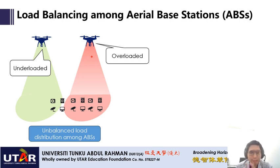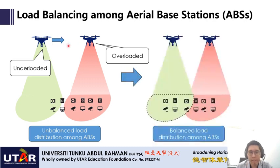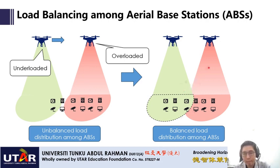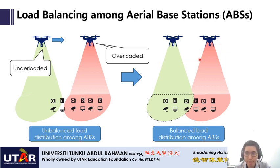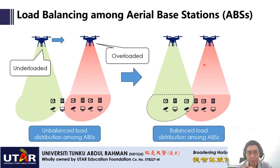3D placement plays an important role in achieving balanced load distribution. For example, if we move an aerial base station in the direction indicated by the arrow, its coverage can reach some users currently served by another aerial base station. Those users can be offloaded to the under-loaded aerial base station, making the load distribution more balanced, improving utilization, and reducing the over-loaded condition. That is how important 3D placement is for load balancing among aerial base stations.